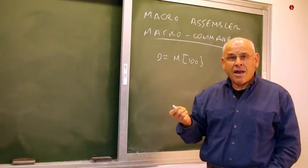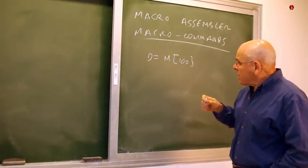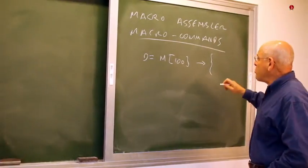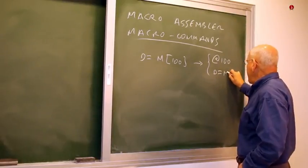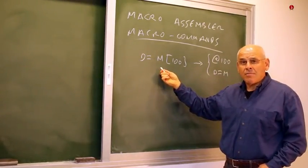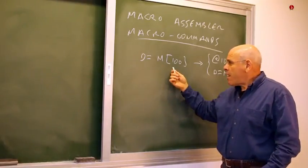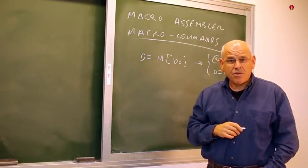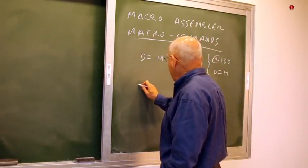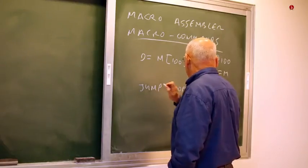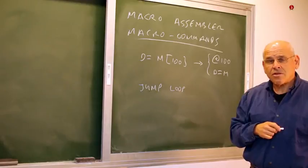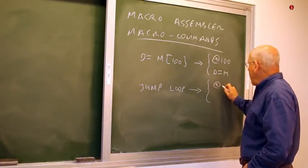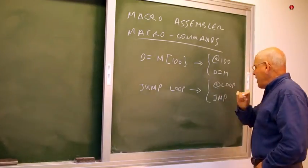The standard hack language does not feature such a command. What I can do is take a command like this and translate it into two valid commands in the hack language: at 100 and D equals M. This is an example of what is sometimes called a macro command — whenever I write this command, I mean that I want these two commands to get executed. Likewise, think about jump instructions. It would be very natural to say something like 'jump to this particular label,' but in the hack language such an instruction is not permitted. Instead, I can expect this instruction to be translated into two instructions: at loop, followed by a standard jump command.